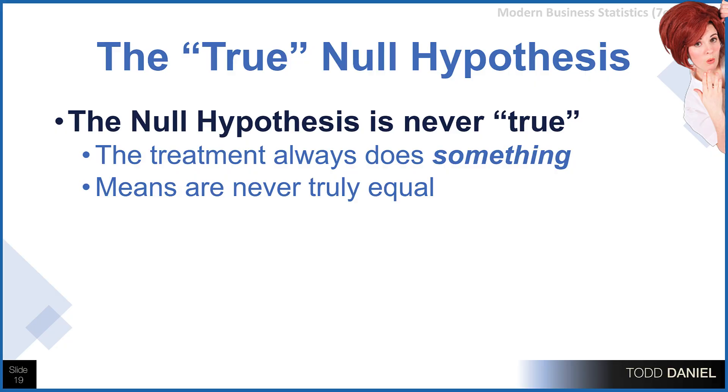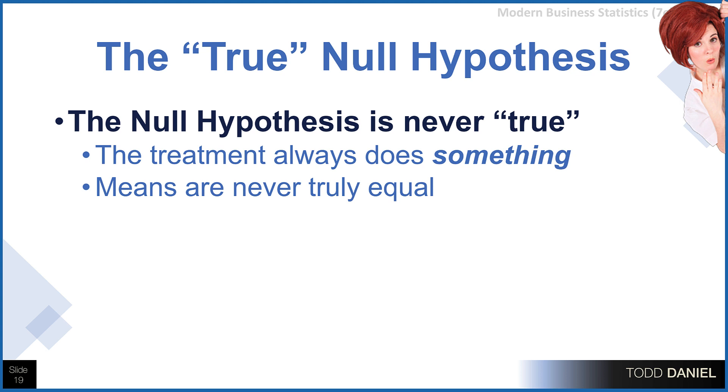But there's a problem with that assumption, the first one being that really the null hypothesis is never actually true. The null hypothesis says that there's no difference between a sample mean and a population mean. But when you draw a sample, if you go out to enough decimal points, eventually there's going to be a difference. So to say that the sample mean and the population mean are exactly the same is never actually true — the sample means are never entirely equal.